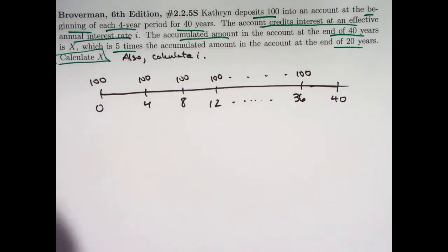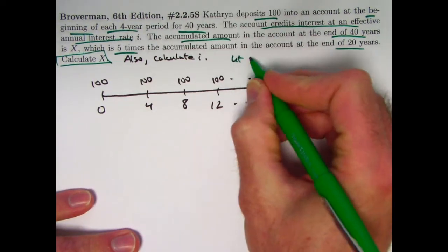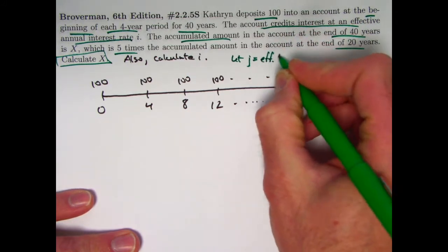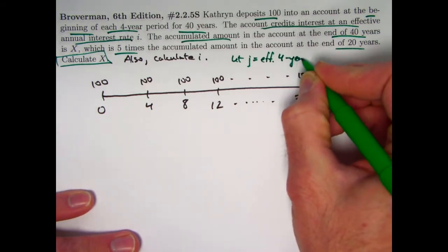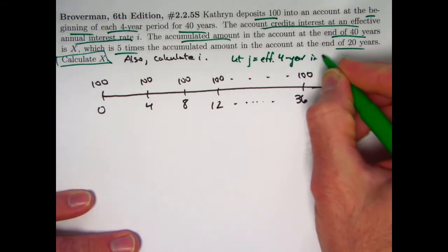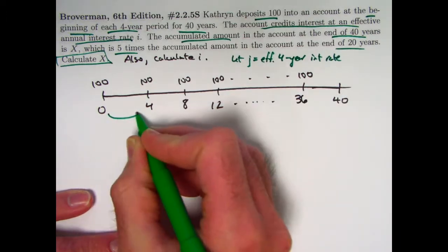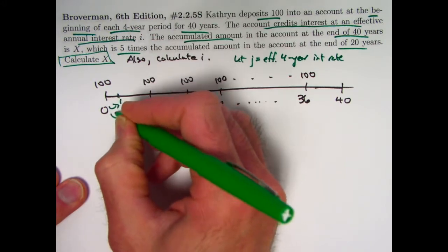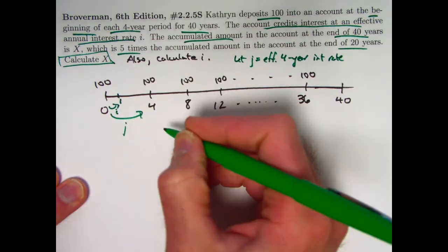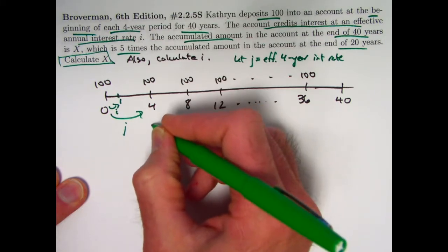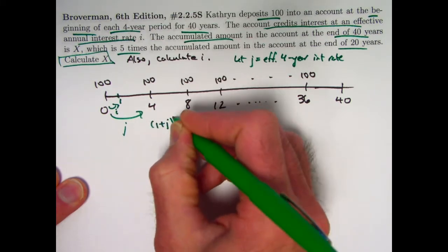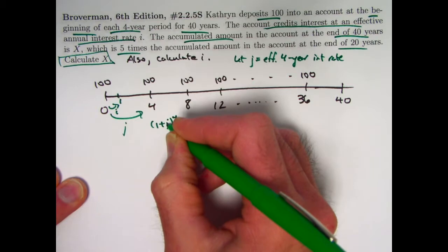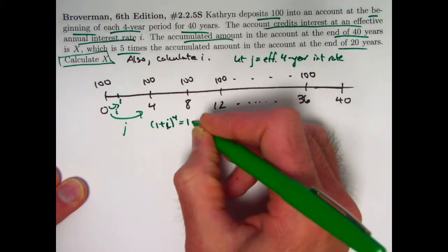Let's let j equal the effective four-year interest rate. It's valid then over four-year periods, whereas i is valid only over one-year periods. How are they related? Well, the simplest thing to write down would be that (1+i) to the fourth power would equal (1+j). This is supposed to be an i here. (1+i) to the fourth power equals (1+j). So j is (1+i) to the fourth minus one.